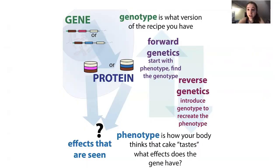Genetic instructions are held in the form of DNA and in the form of genes, which are the instructions for making individual proteins or functional RNAs. Basically, your genotype is what version of that genetic information you have — what specific sequence you have. And then the phenotype is what effects does that have — what does it mean functionally for you to have that specific gene?